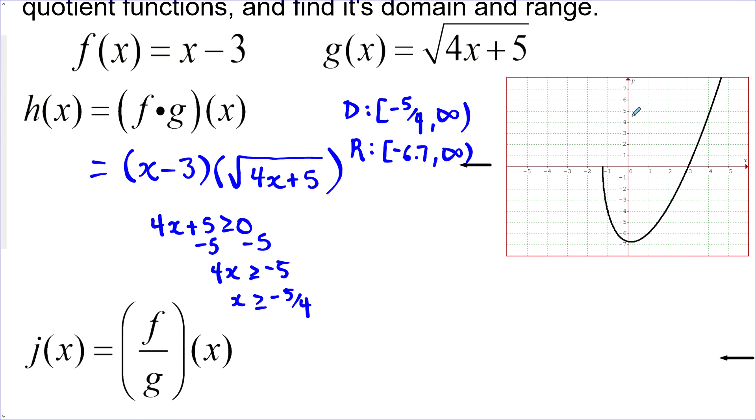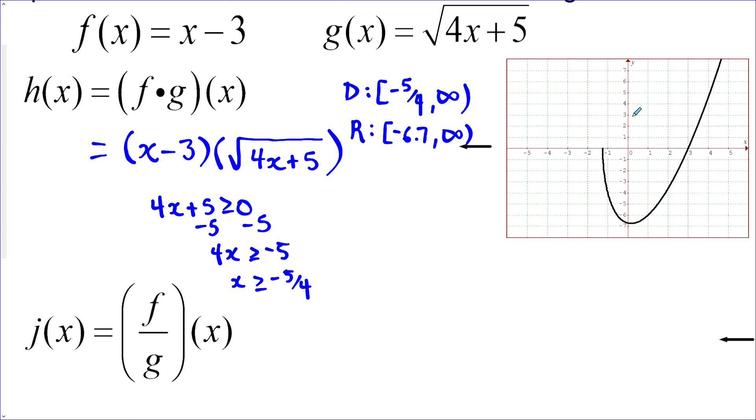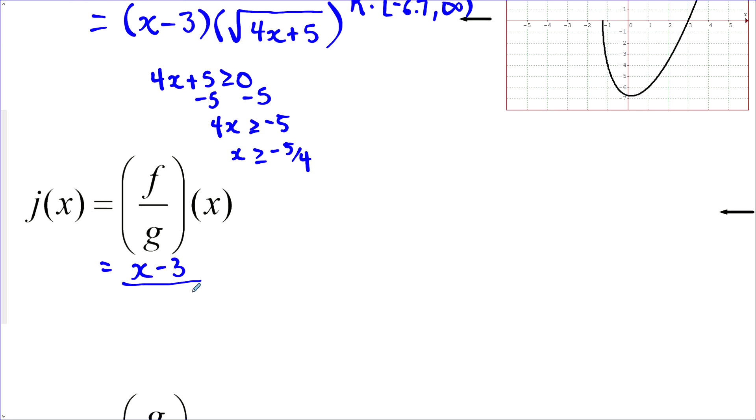The next one is f divided by g. So f is our linear, x minus 3, and g is our radical, the square root of 4x plus 5. And we want to find the domain. This time we still have to worry about the radicand here being greater than or equal to zero. But now it can't equal zero because it's in the denominator. So we do similar algebra to what's up there and we would get greater than negative 5 over 4, but not equal this time.